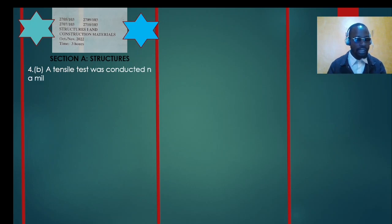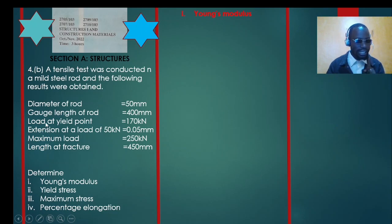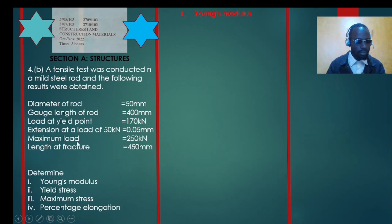A tensile test was conducted on a mild steel rod. The following results were obtained: the diameter of the rod is 50 millimeters, the gauge length is 400 millimeters, the load at yield point is 170 kilonewtons, the extension at a load of 50 kilonewtons was measured to be 0.05 millimeters, the maximum load was 250 kilonewtons, and the total length at fracture was 450 millimeters.